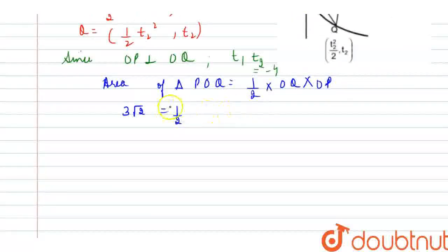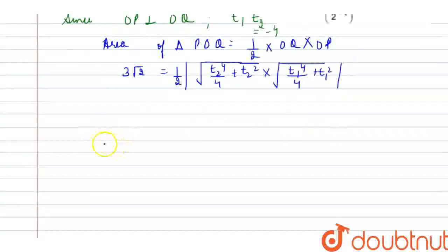What would be the value of OQ? That would be mod of, I am taking 1 by 2 outside, so mod is inside. OQ is under the root of t2 raised to the power 4, upon 4, plus t2 square, basically I have used the distance formula. What is OQ? Into, this would be into, t1 raised to the power 4, upon 4, plus t1 square mod.